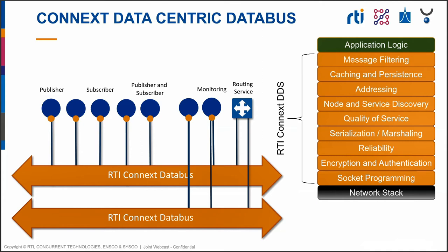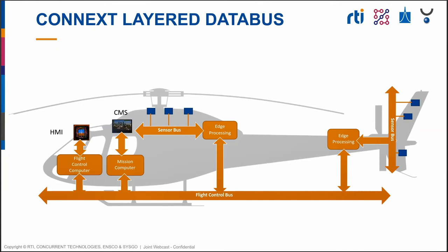DDS is also good for connecting different types of systems — even those with different data models. Legacy systems or other data types can be brought in through a routing service that puts data into the data model so it can be shared. Looking at an aircraft, you may have a large flight control bus covering sensor platforms feeding the flight control computer, multiple mission computers each with their own data, and sensors throughout the aircraft feeding both flight controls and the mission computer.